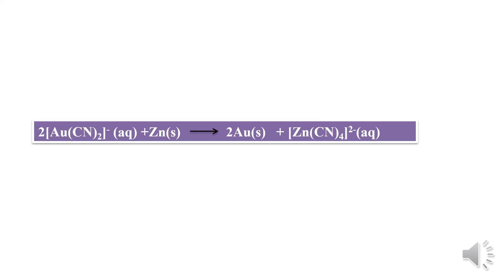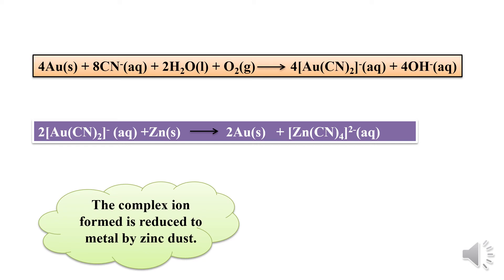These are the reactions taking place in the leaching process for gold or silver. The process is called the MacArthur-Forest cyanide process. Gold is leached with sodium cyanide (CN⁻) in the presence of O₂, which acts as an oxidizing agent, to obtain the dicyanoaurate complex. This complex is then reduced in the presence of zinc to obtain gold metal.